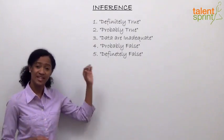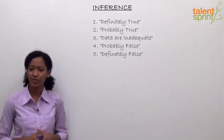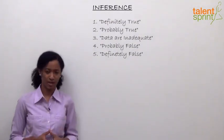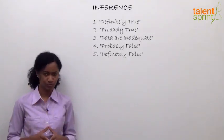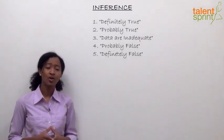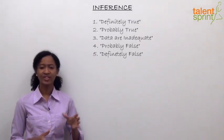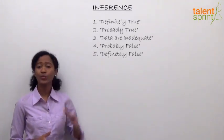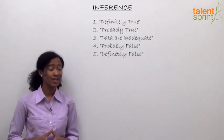If the statement inferred is definitely true based on the facts from the passage, I will click option one. If the statement is probably true — we don't have all the information but slight or relevant information is available — then we will click option two if it's probably true.